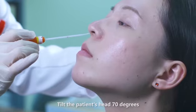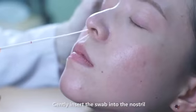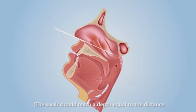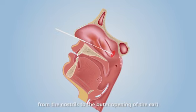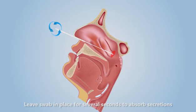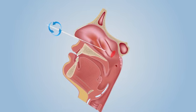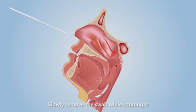Tilt the patient's head 70 degrees. Gently insert the swab into the nostril. The swab should reach a depth equal to the distance from the nostrils to the outer opening of the ear. Leave swab in place for several seconds to absorb secretions. Slowly remove the swab while rotating it.